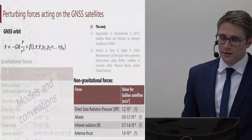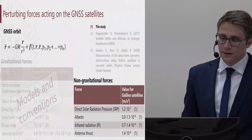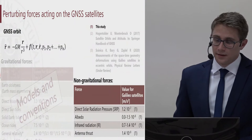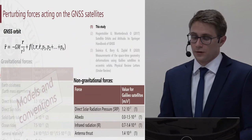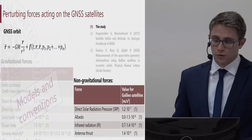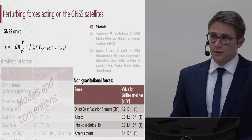However, the non-gravitational forces remain still challenging to model. The highest non-gravitational force acting on a GNSS satellite is the direct solar radiation pressure. The second highest is albedo, which comprises solar radiation reflected from the Earth's surface acting back on the satellite. The third is infrared radiation, caused by accelerations induced by thermal Earth radiation. And finally, the antenna thrust — this results from constant radial accelerations due to the navigation signal being continuously broadcast by the satellite.